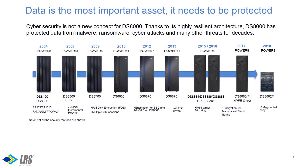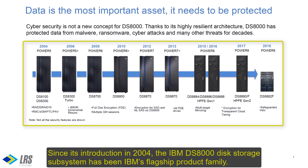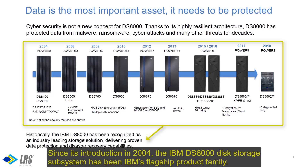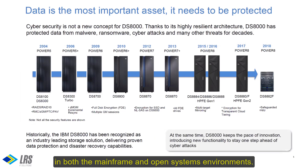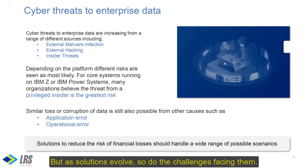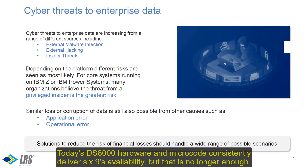Data is the most important asset in your corporation. Since its introduction in 2004, the IBM DS8000 disk subsystem has been IBM's flagship product. It delivers industry-leading performance and availability to the high-end and high-availability marketplaces, in both the mainframe and open systems environments. But as solutions evolve, so do the challenges facing them. Today's DS8000 hardware and microcode consistently delivers six nines availability, but that is no longer enough.